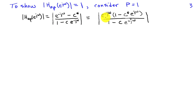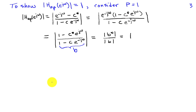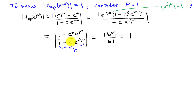In the numerator, factor out the e^(-jω) term to write the numerator as e^(-jω) times the quantity (1 - c* · e^(jω)). We recognize that the magnitude of a product is the product of the magnitudes, and the e^(-jω) term has magnitude 1. So we can factor that out and write what's left as |1 - c* · e^(jω)| / |1 - c · e^(-jω)|. At this point, a bit of inspection reveals our desired result.